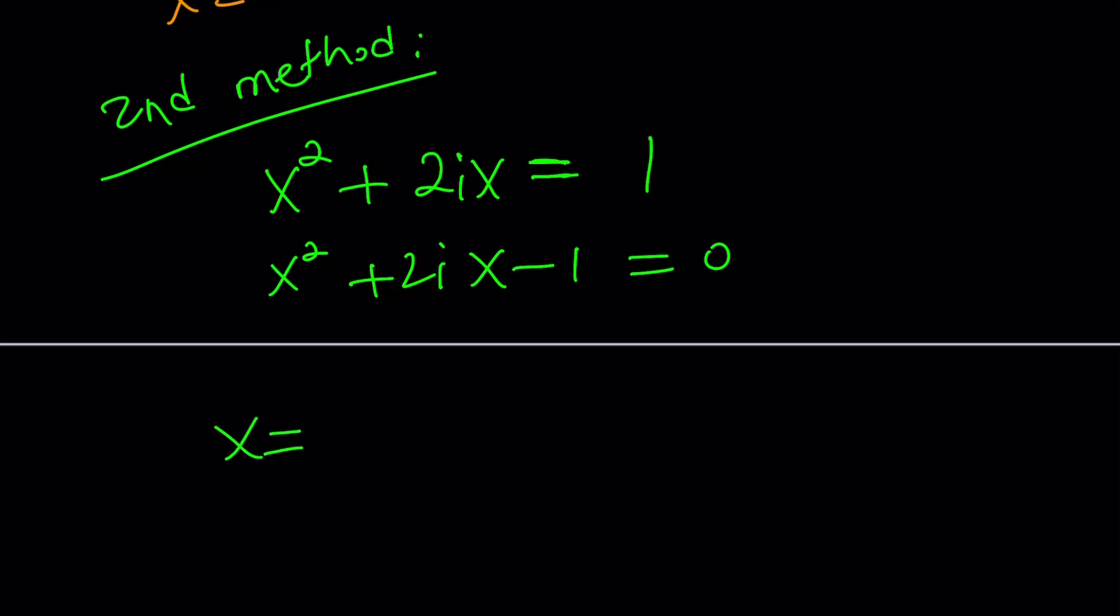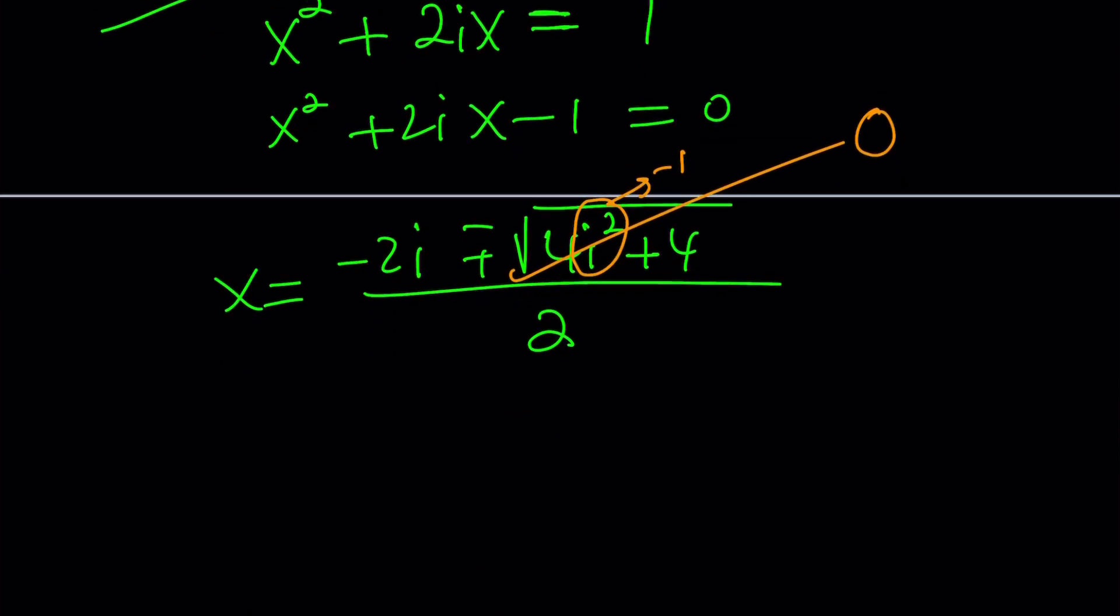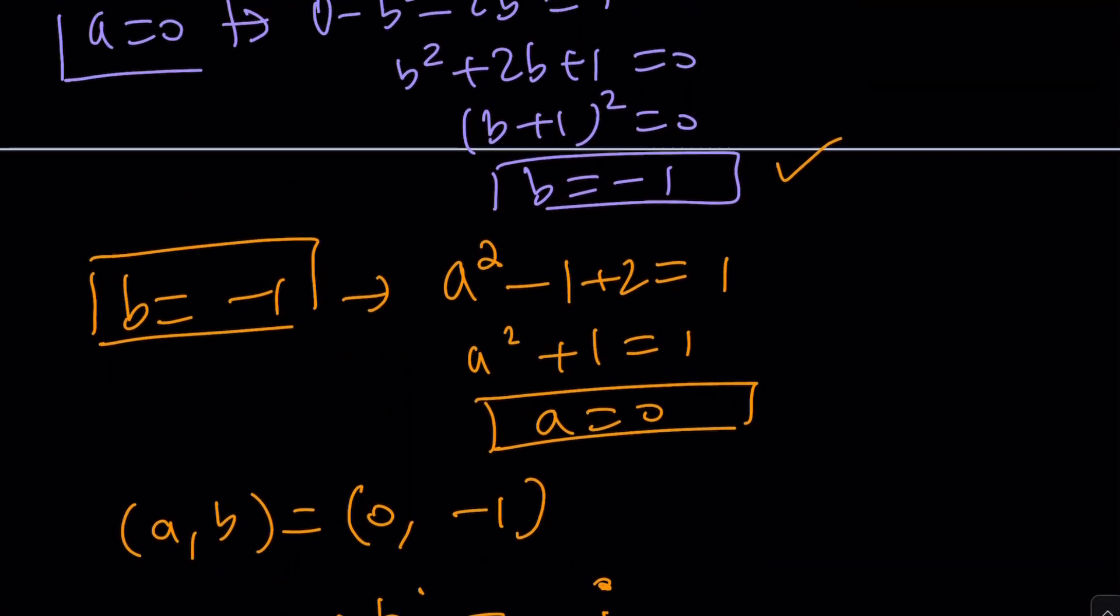What does it say? Negative b, negative 2i, plus minus the square root of b squared, which is 4i squared, minus 4ac, which is plus 4, divided by 2a, which is 2. But i squared is negative 1. So 4 times negative 1 is negative 4. Negative 4 plus 4 is 0. So this is 0. Oh, great. That kind of explains why we ended up with one solution with the first method, right? Hopefully. And now this gives you negative 2i divided by 2, which is negative i. And that's the same solution that we found before with the longer method.